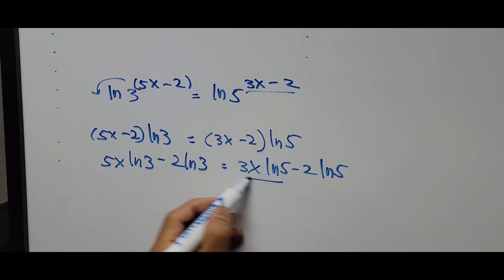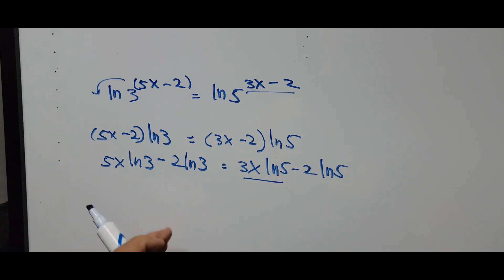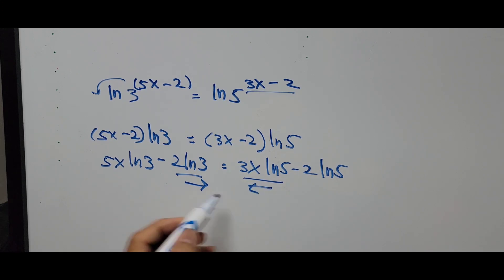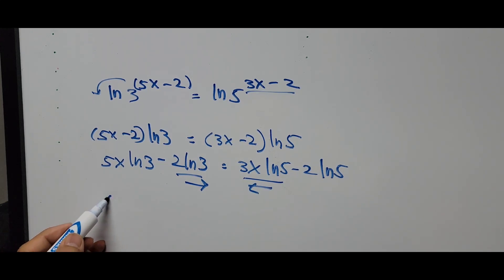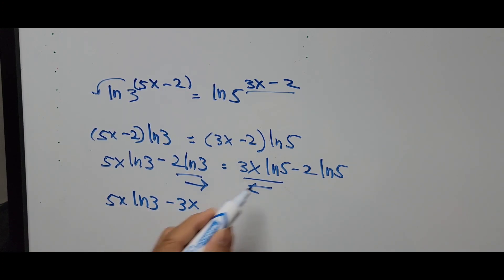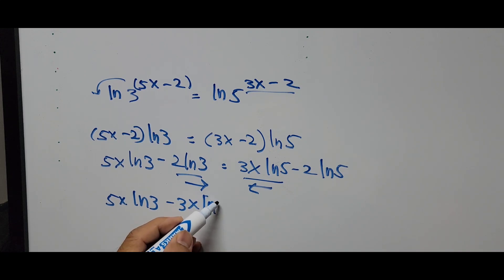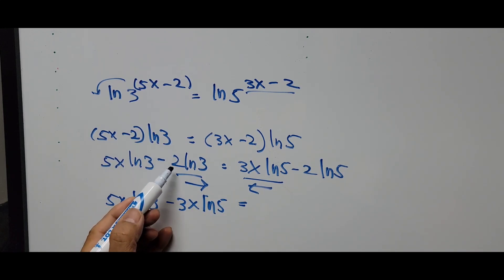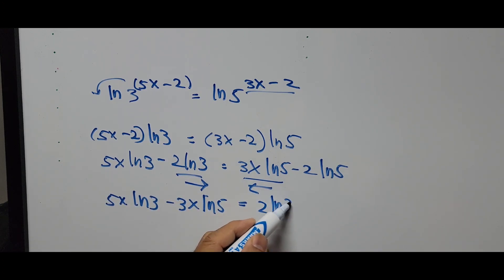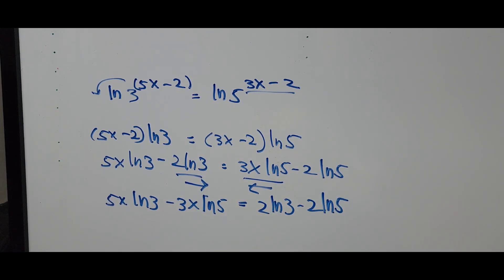Transposing the x terms to the left and the constants to the right, we get: 5x ln of 3 minus 3x ln of 5 equals 2 ln of 3 minus 2 ln of 5. Then we factor out x on the left side: x times (5 ln of 3 minus 3 ln of 5).